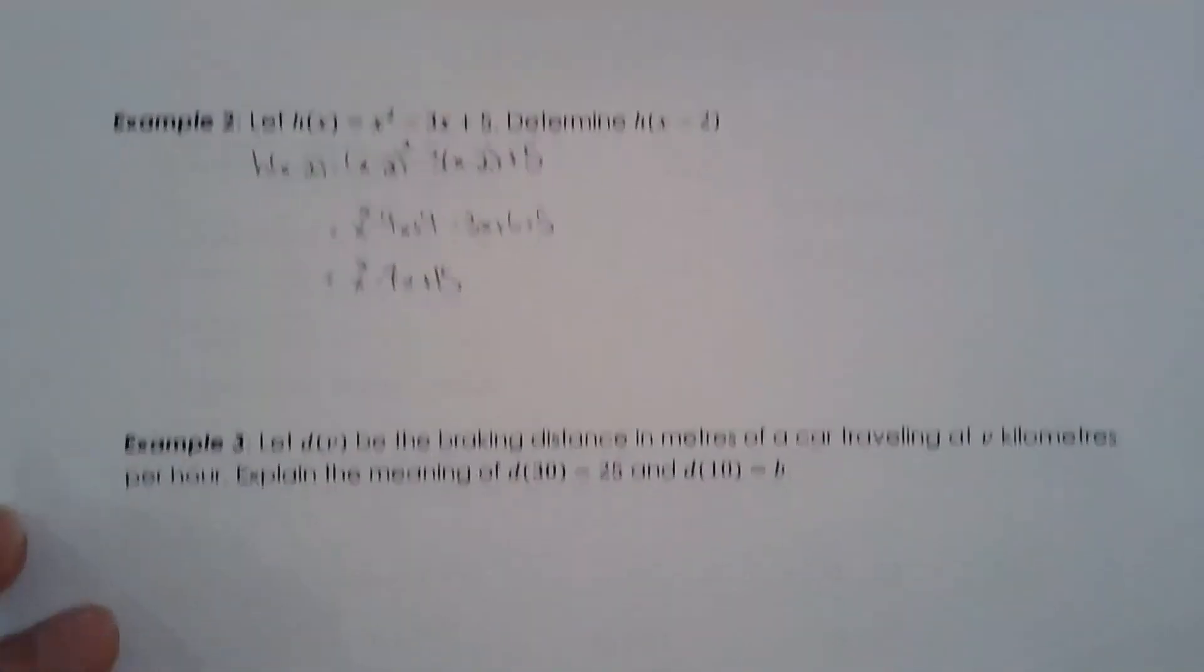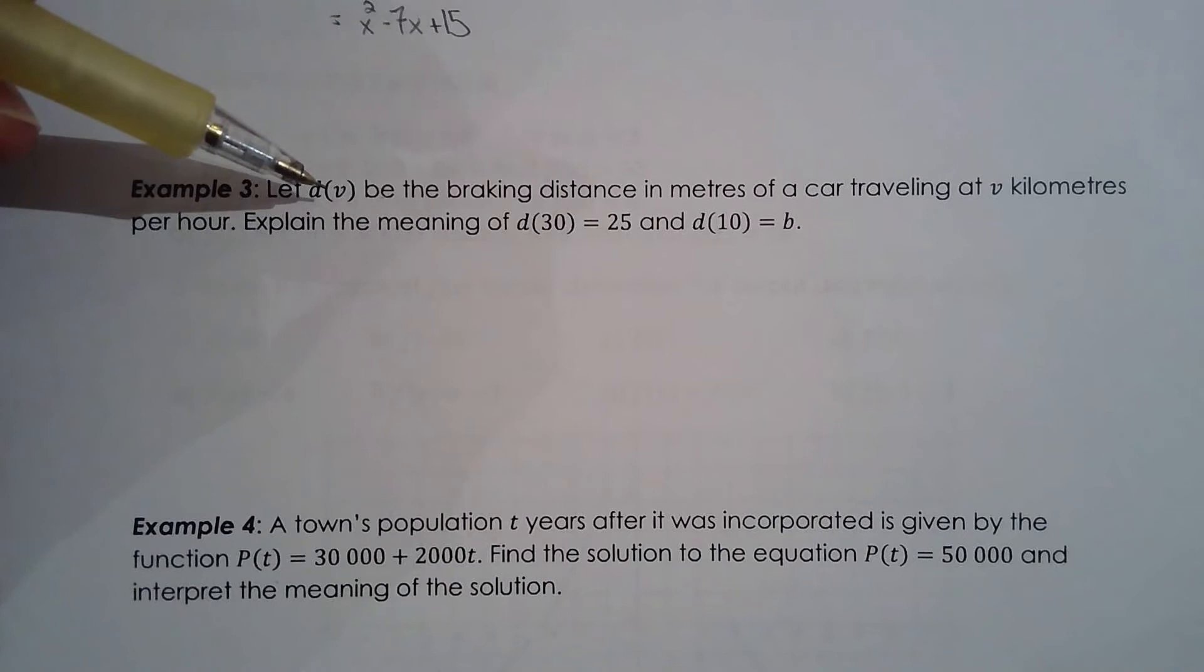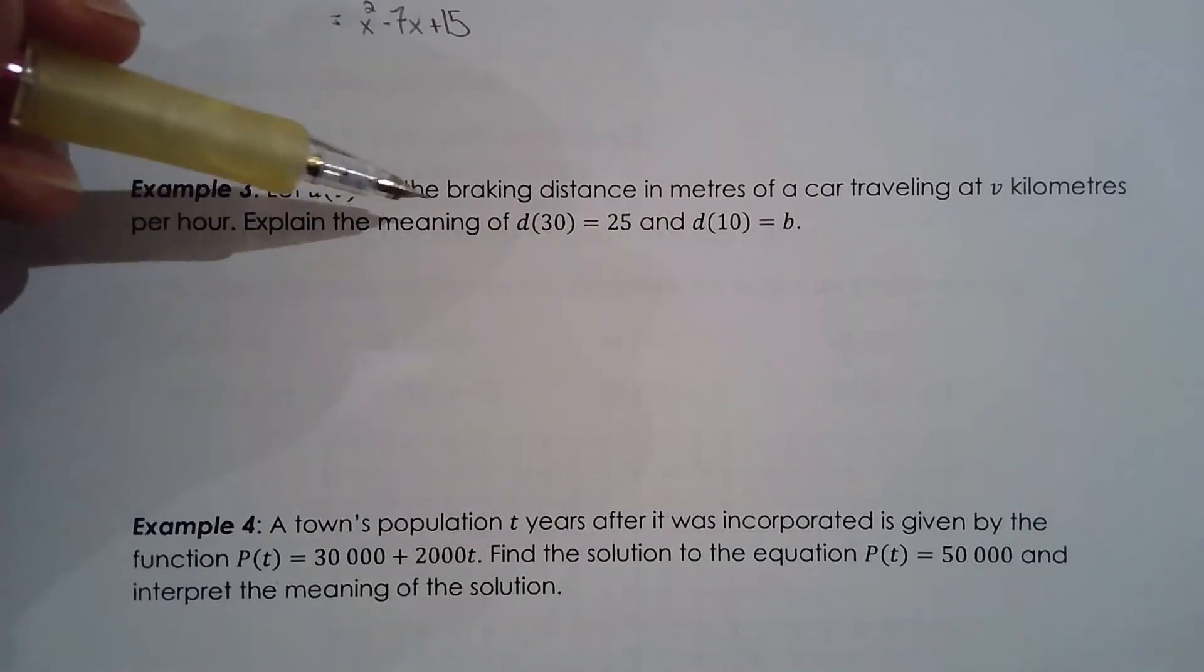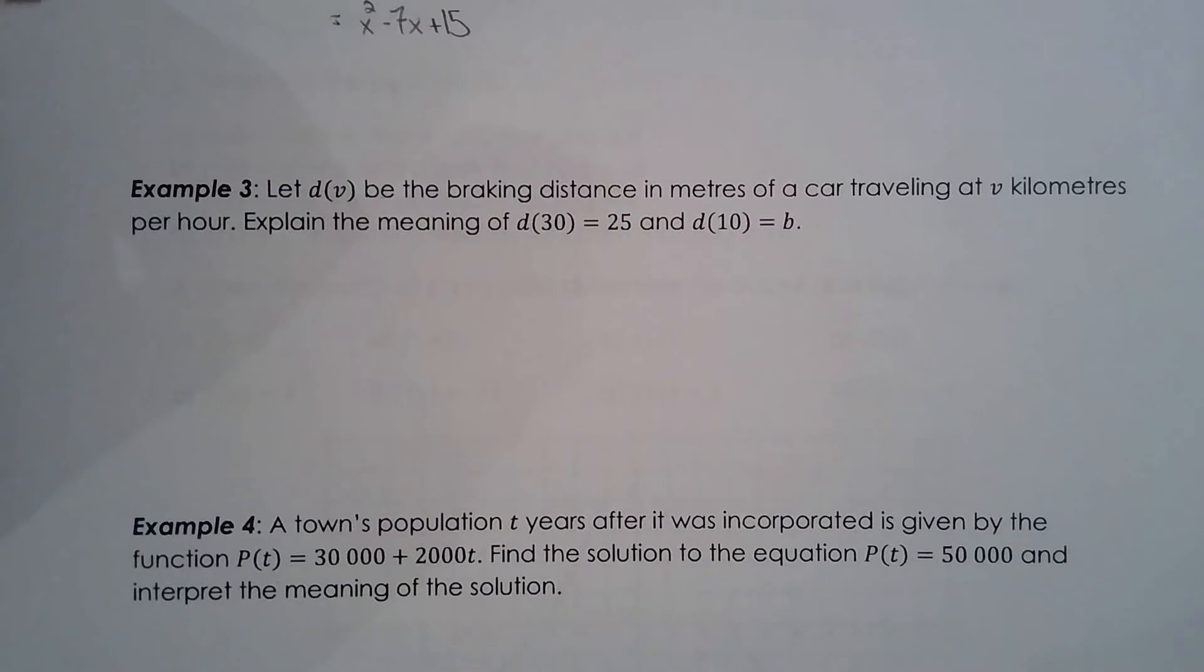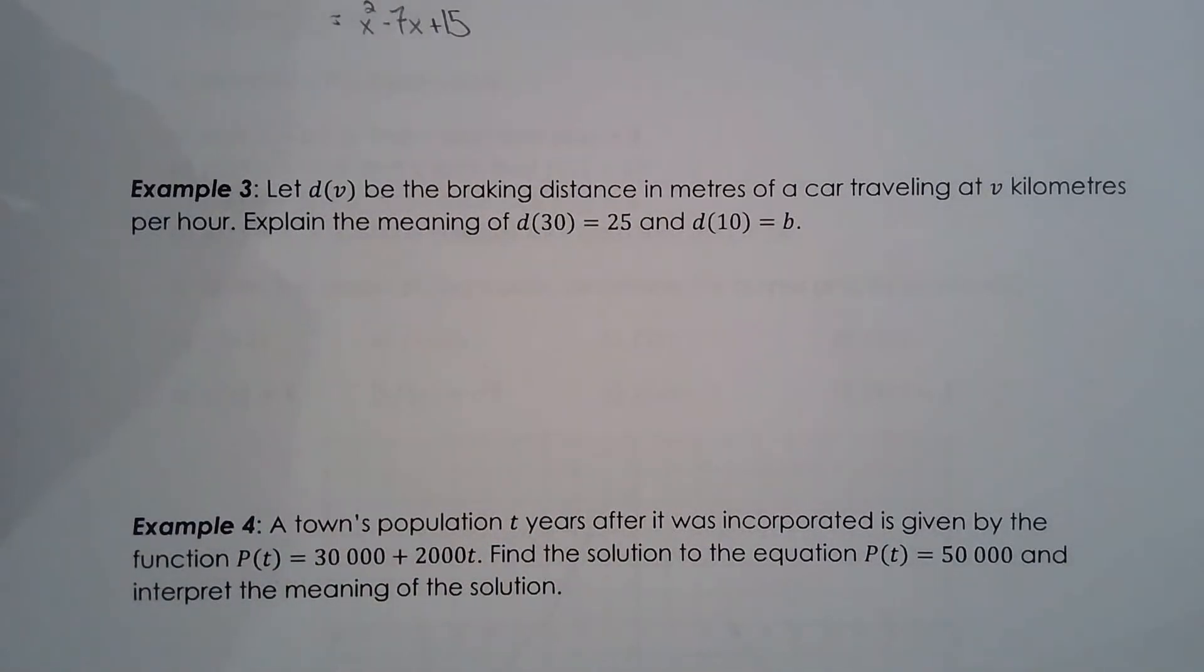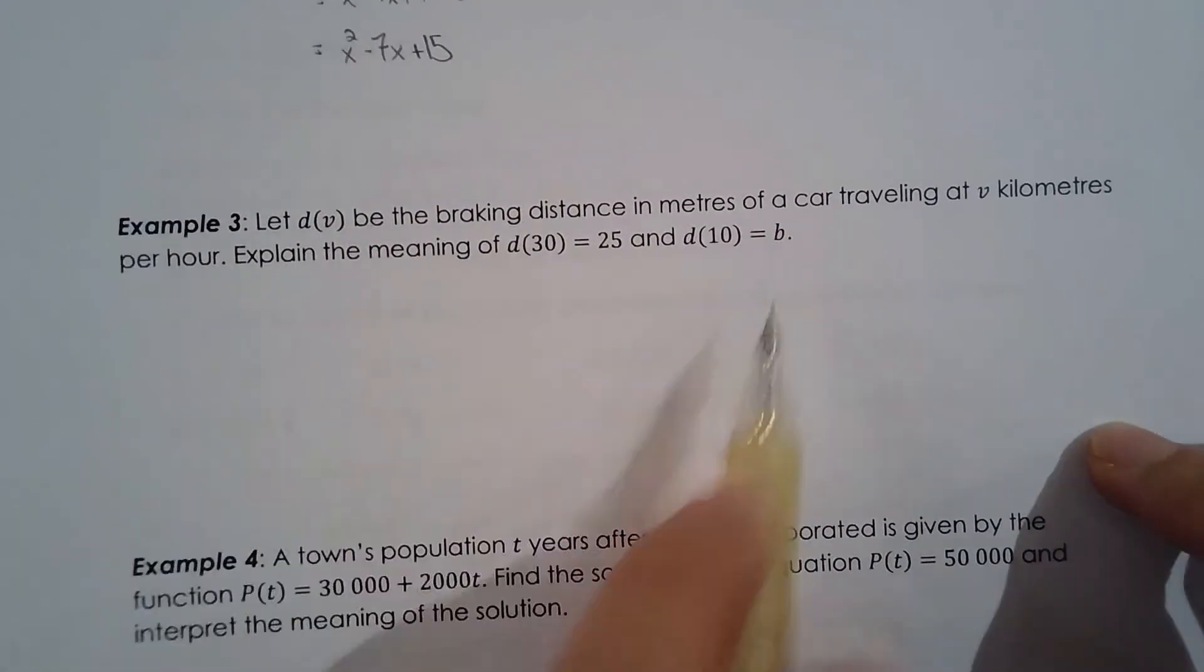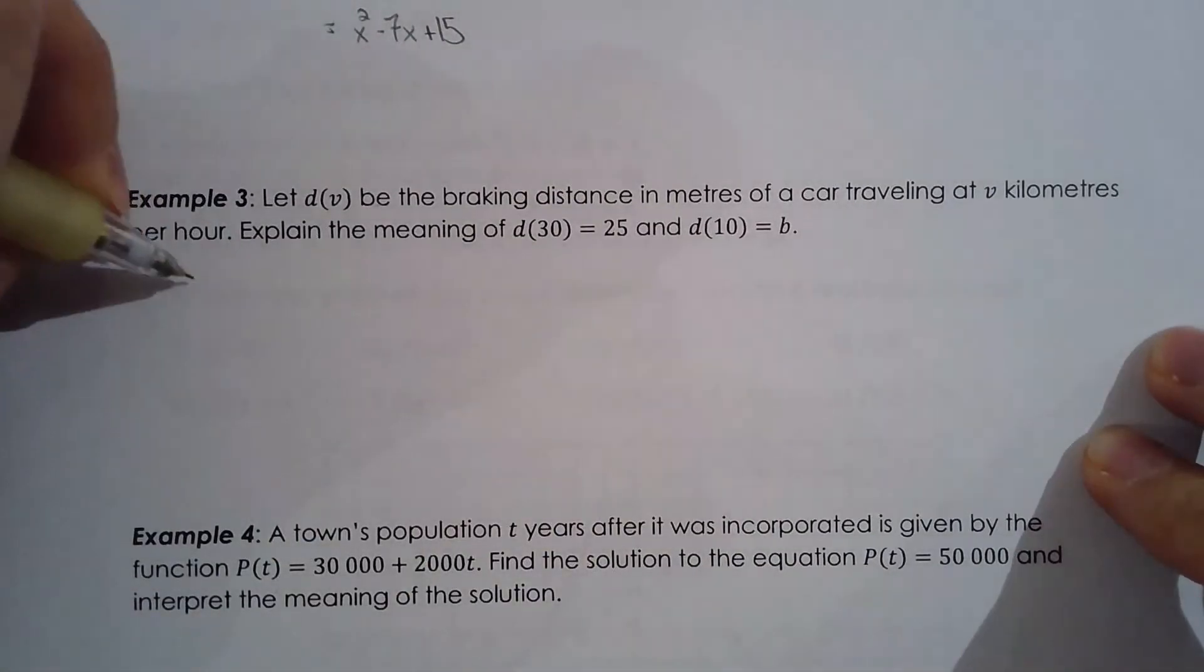Now what if we're working with a word problem here. So let d of v be the braking distance in meters of a car traveling at v kilometers per hour. Explain the meaning of d of 30 equals 25 and d of 10 equals v. So let's do d of 30 equals 25 first. So when the input is 30, the output for the function is 25. What is the input in this case? v, which is kilometers per hour.